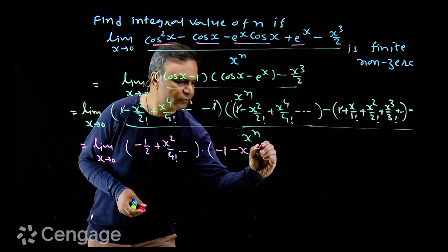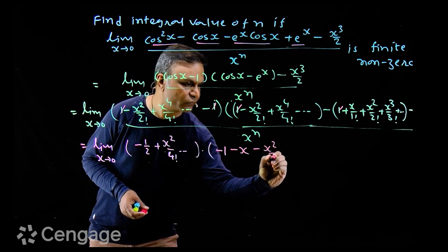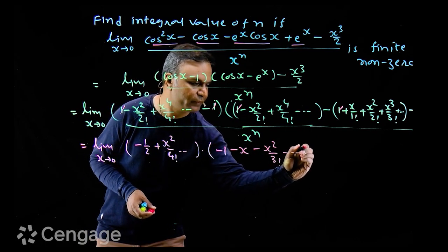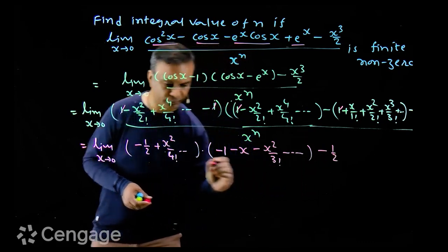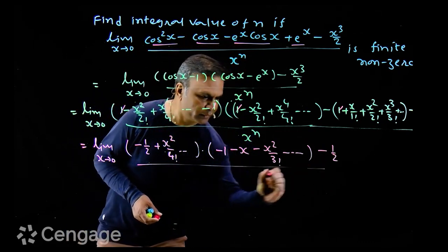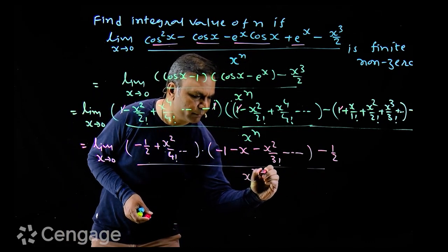Taking x common, I am left with minus x square upon 3 factorial and so on. This divided by x power n minus 3.